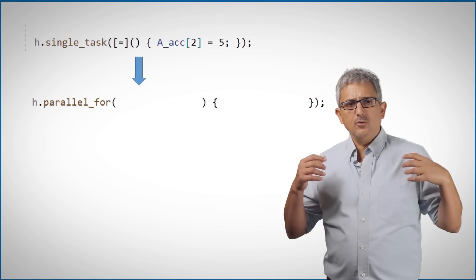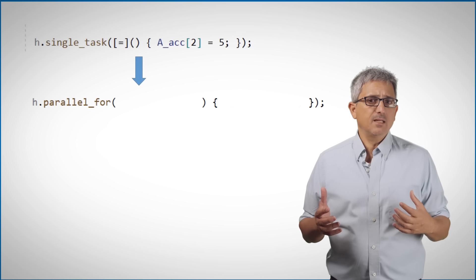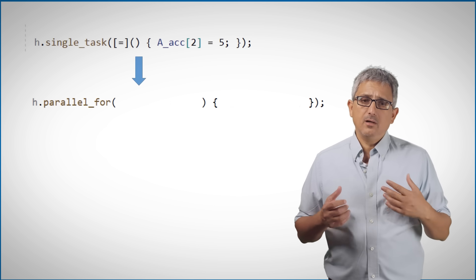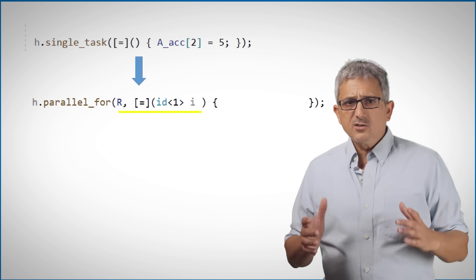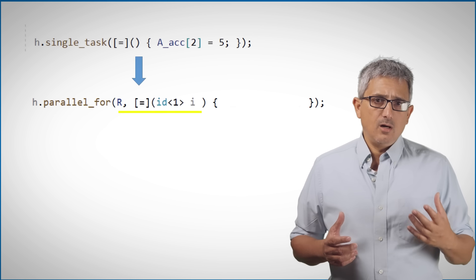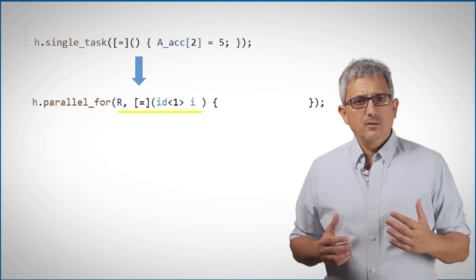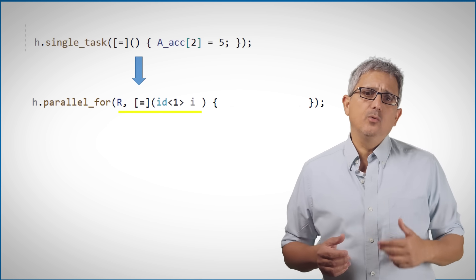But if we would like to execute this kernel multiple times, we can use parallel_for. Now since we are iterating, we need to define the range to iterate on and an index to refer to.